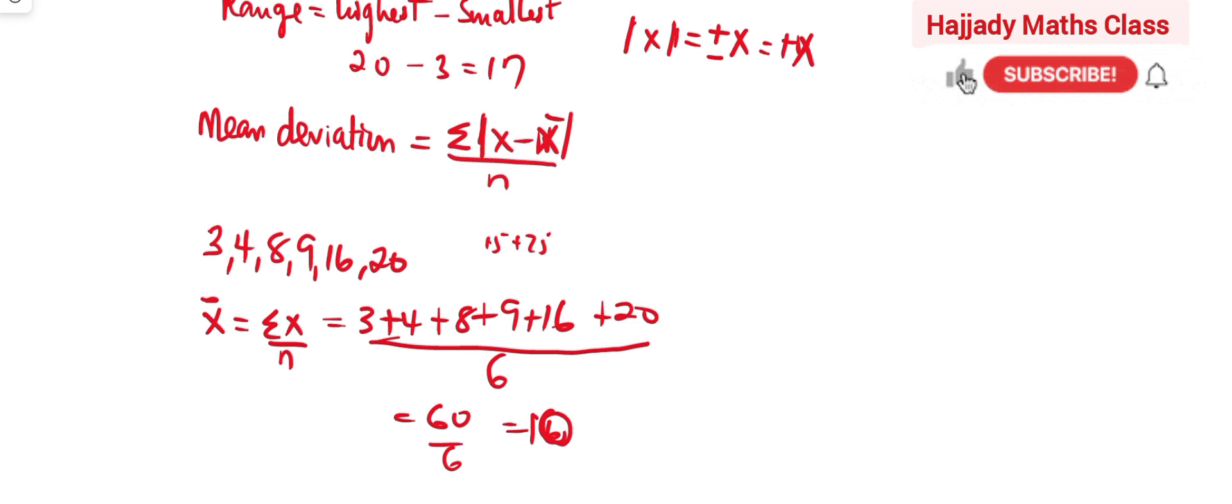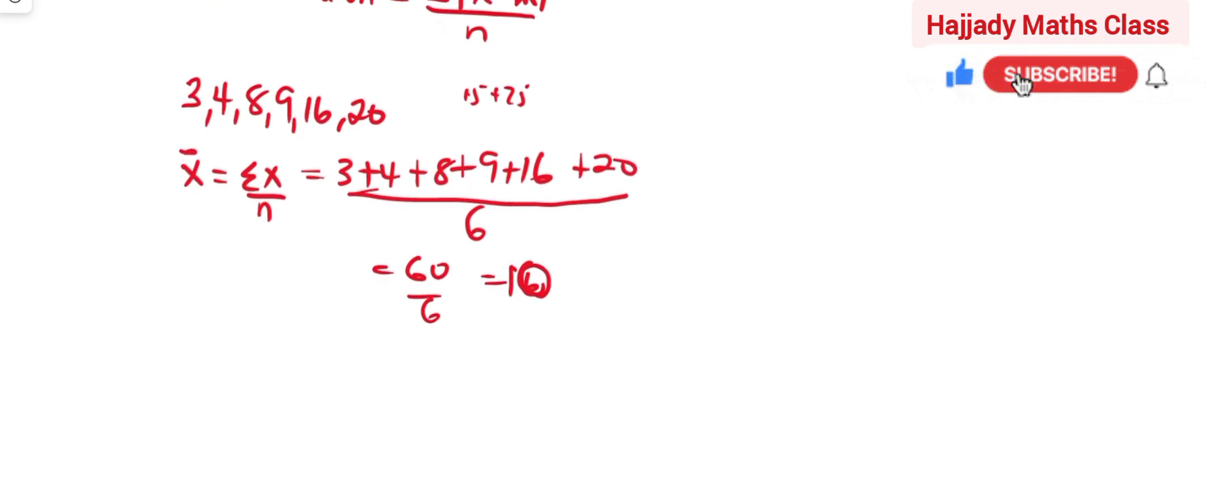So using this same derivation formula to be summation |x minus x̄| over n, my mean deviation, I can represent that with MD, is going to be summation of my x minus x̄.